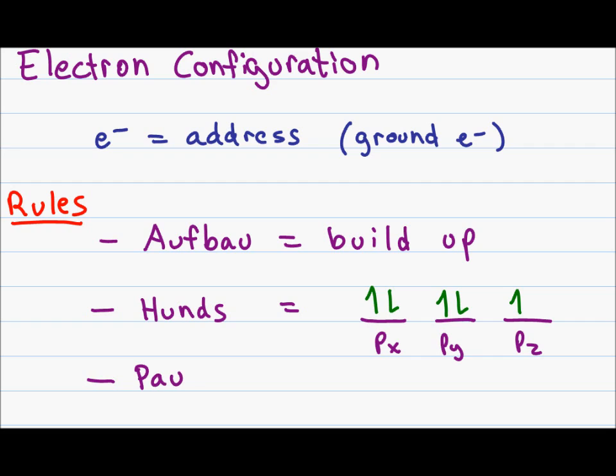The final rule is the Pauli exclusion principle, and what this tells us is that no two electrons can ever occupy the same exact address. If two electrons are in the same s orbital, one will be the upspin, or let's say s1, and the other will be the downspin. Every part of the address can be the same as long as there is one difference.